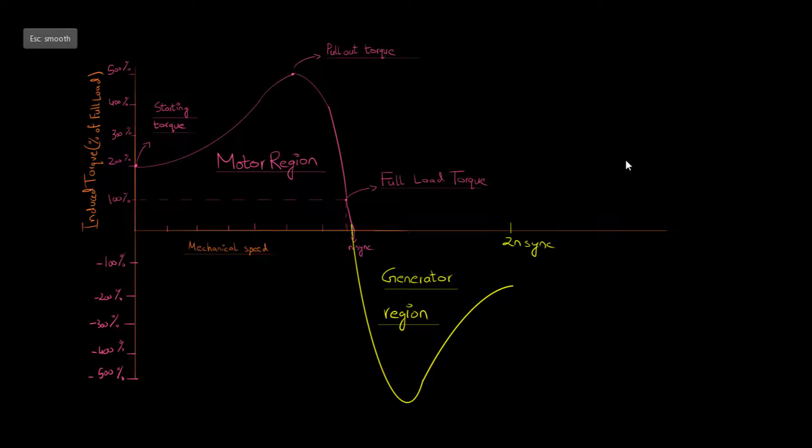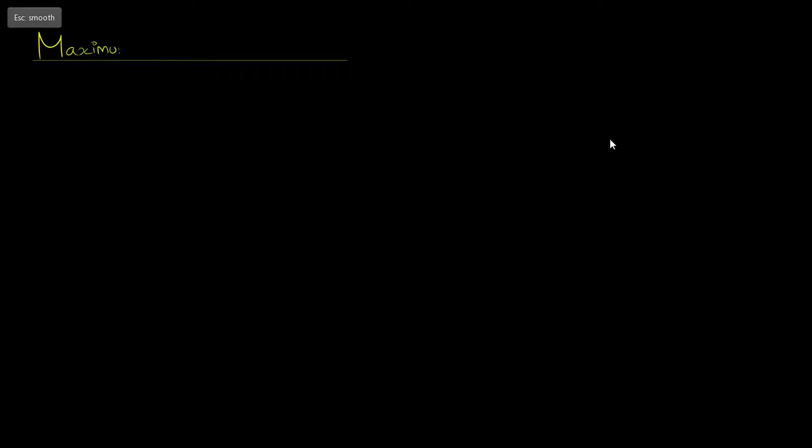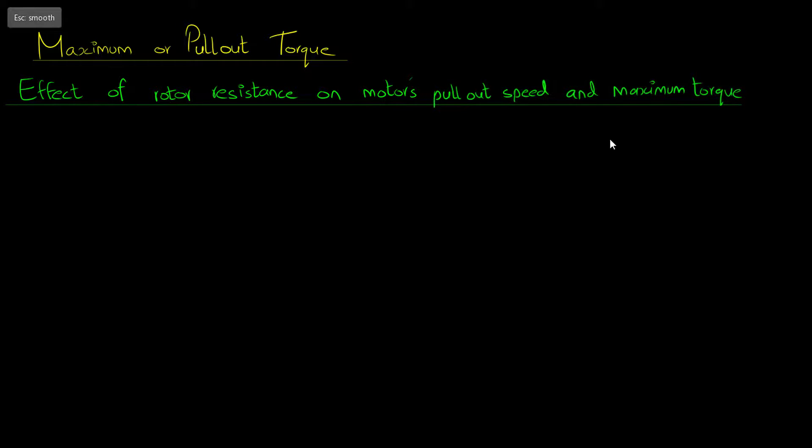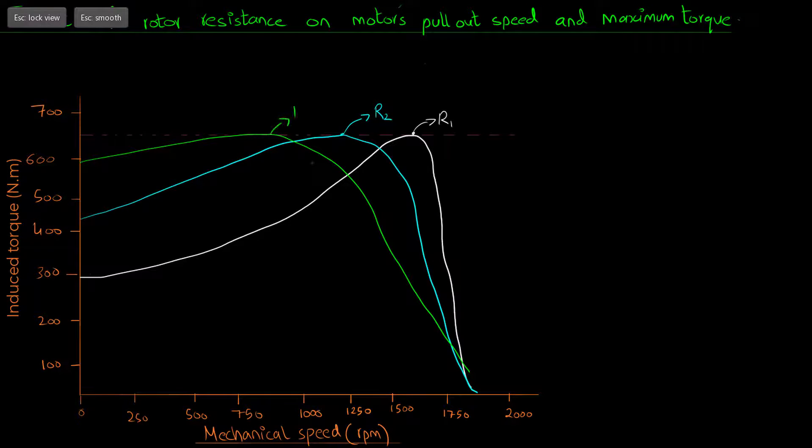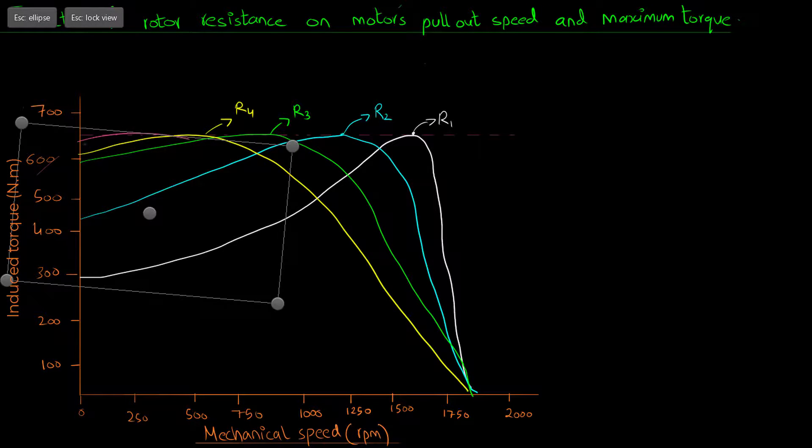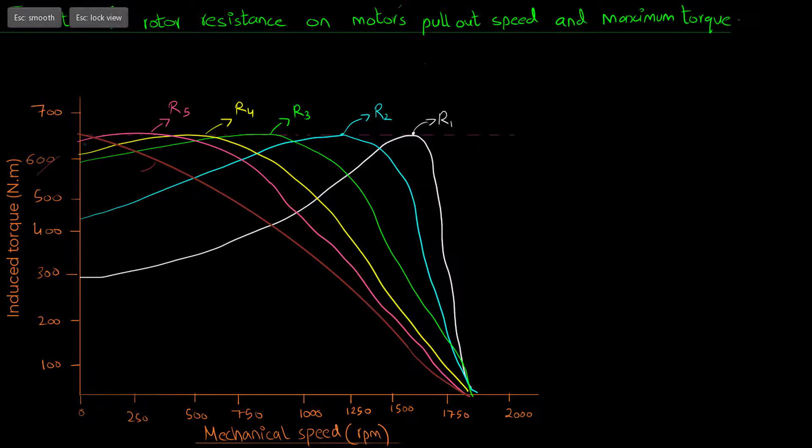Now let's look at the maximum or pullout torque of an induction motor in a bit more detail. The figure below shows the effect of the rotor resistance on the motor's pullout torque and the maximum torque. It can be observed that if the rotor resistance is increased, the pullout speed of the motor decreases, but the maximum torque remains constant. The maximum induced torque occurs when the power consumed by the rotor resistor is maximum.